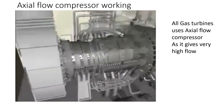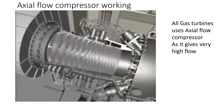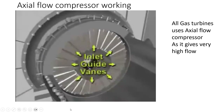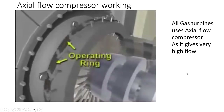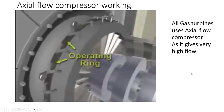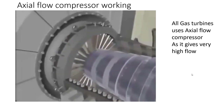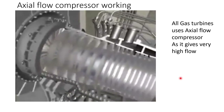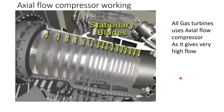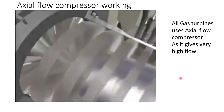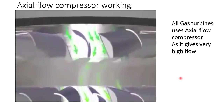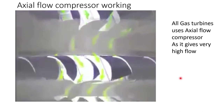Variable inlet guide vanes are located in the inlet casing directly in front of the first row of compressor blades. The vanes are used to regulate the amount of air entering the compressor. The circular operating ring actuates the guide vanes so that all vanes move in unison when opening or closing. Before each set of rotating blades is a set of stationary blade rings that direct the air to the next set of rotating blades. These stationary airfoil-shaped vanes direct air to and from the rotating compressor blades.